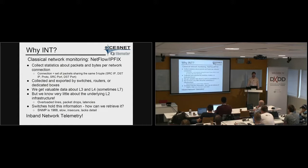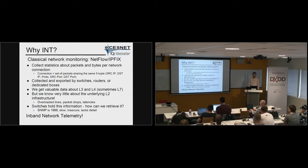These statistics are typically collected by switches or routers, or if you want high-precision, high-quality data, you put dedicated boxes into your network to see all the traffic and report on it. This way, you get a lot of really nice information about layer 3, layer 4, or sometimes even layer 7, but you know very little about what's going on in the infrastructure at layer 2.